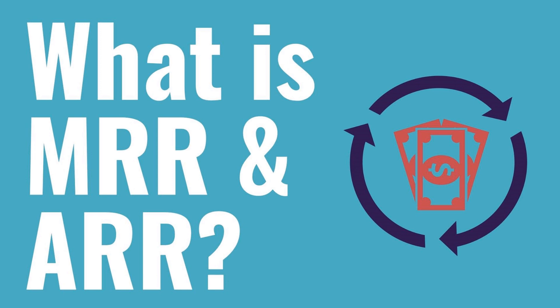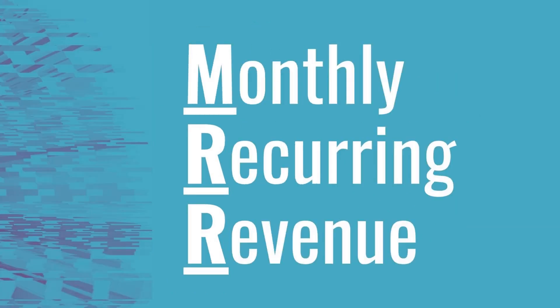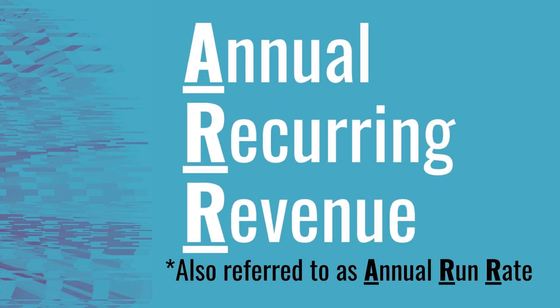Today I'll be answering the question: what is MRR and ARR? What do they stand for and how do you calculate them? MRR stands for Monthly Recurring Revenue and ARR stands for Annual Recurring Revenue, which is also referred to as Annual Run Rate.